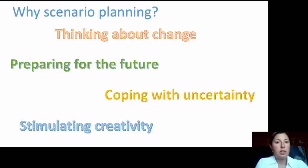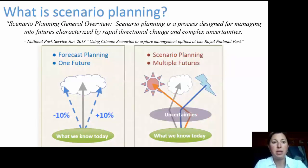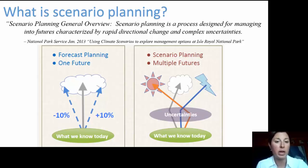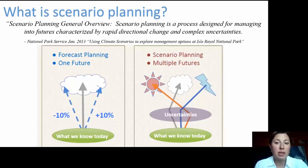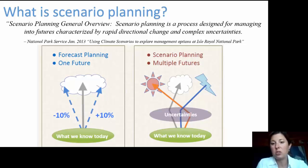Generally, scenario planning is a process designed for managing futures characterized by rapid directional change and complex uncertainties. A common practice is to use forecast planning or prediction models — starting with a base of hard facts we know today and arriving at one future with varying degrees of those facts, such as less or more precipitation. However, scenario planning allows us to start with the same base of hard facts but take into account uncertainties, arriving at multiple different stories to explain different futures.